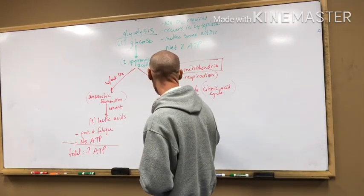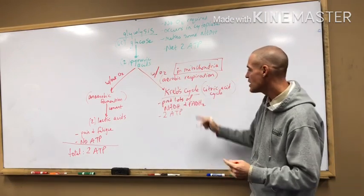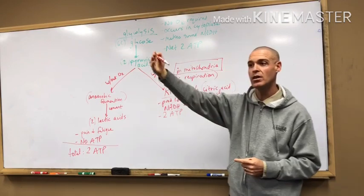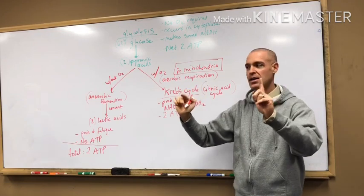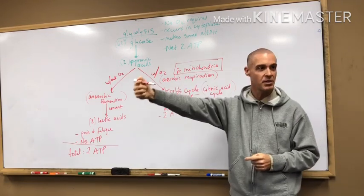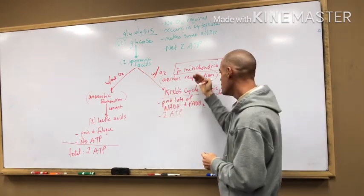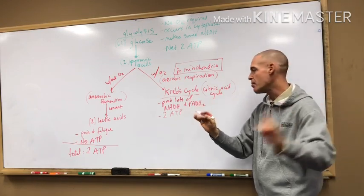So then what else do we get from Krebs cycle? Well, we get two ATP. Not impressive. Again, keep in mind, all these numbers are based on the one glucose molecule. So for every glucose molecule, two ATP again over here under Krebs. But again, the fact that it makes all this NADH and FADH2 is going to redeem itself and make it a lot more helpful. So that's going to be the key things about Krebs that we're just kind of looking at big picture again.